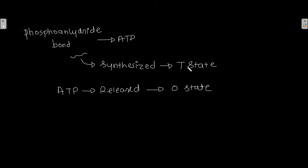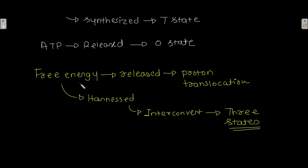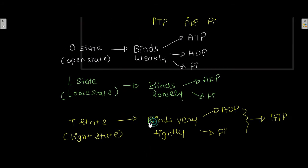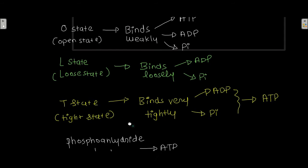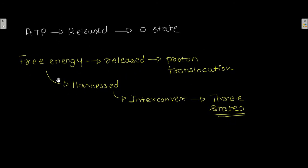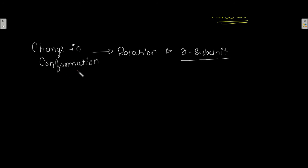The phosphoanhydride bond of ATP is synthesized in the T state, and ATP is released only in the O state. The free energy released during proton translocation is harnessed to interconvert these three states — O state, L state, and T state. The change in conformation occurs due to the rotation of the gamma subunit, changing from O state to L state to T state.